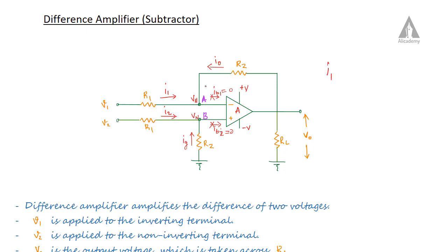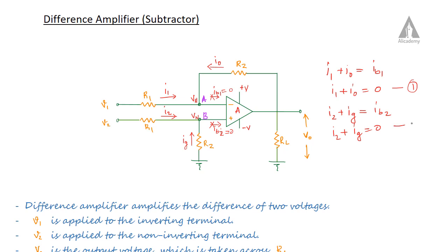Applying KCL, we can write: I1 plus I0 is equal to Ib1, so we can simply write I1 plus I0 is equal to 0. This is equation number one. Similarly, I2 plus Ig is equal to Ib2, so we can write I2 plus Ig is equal to 0. This is equation number two.